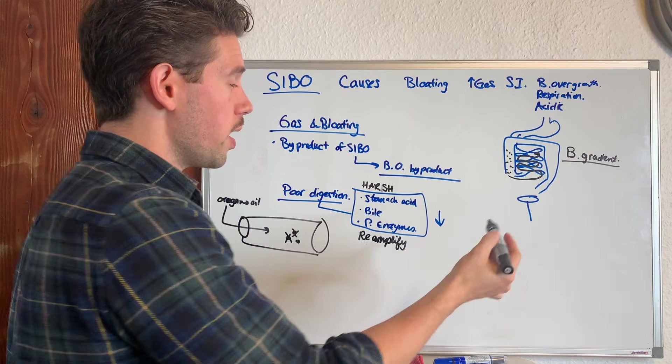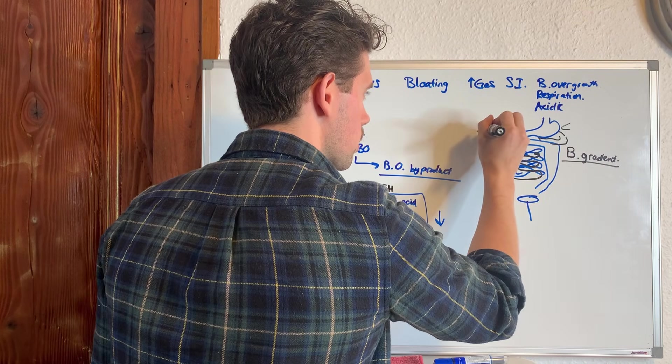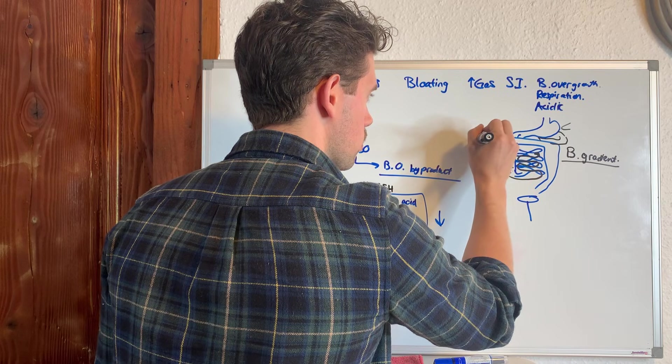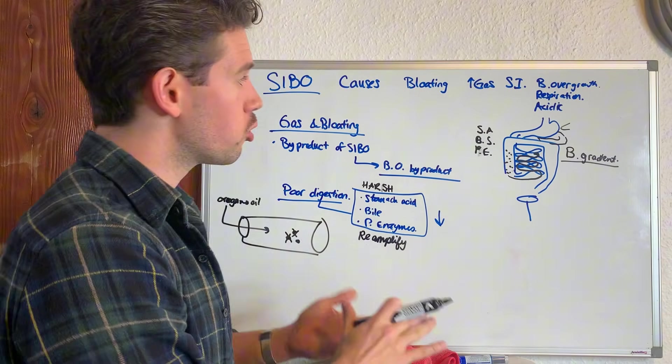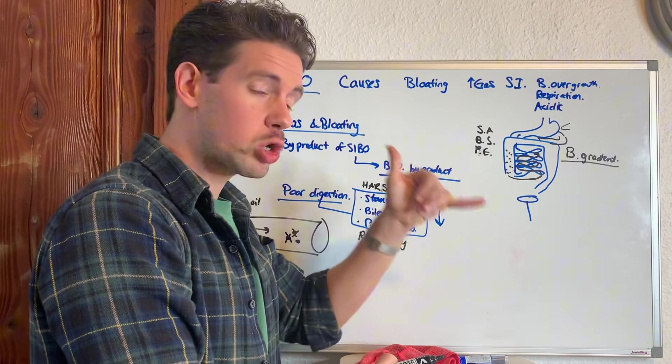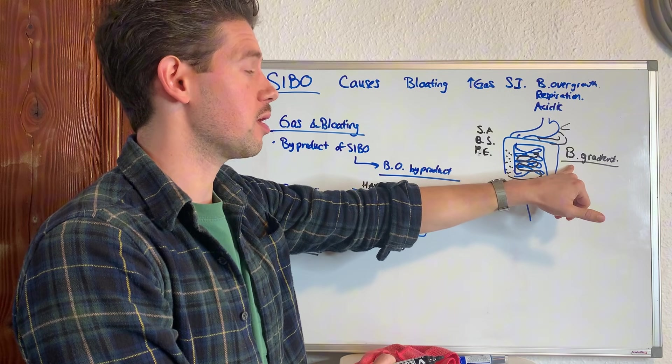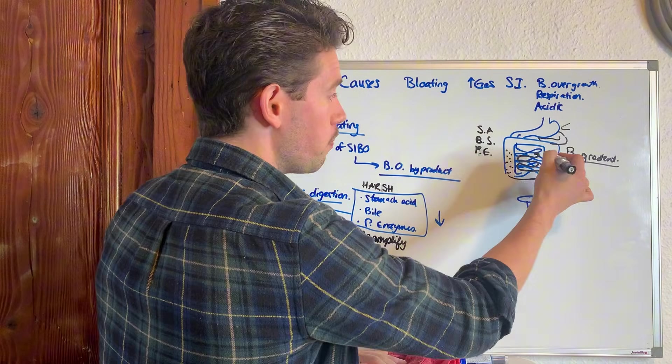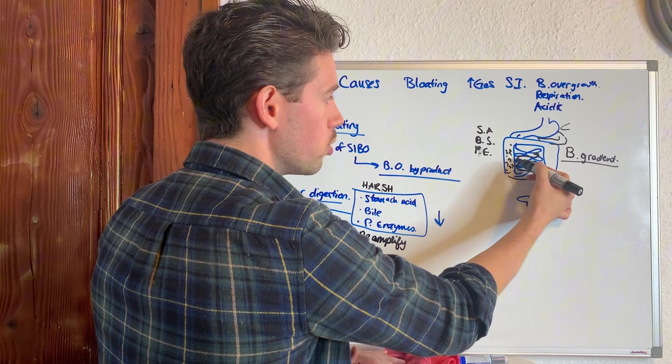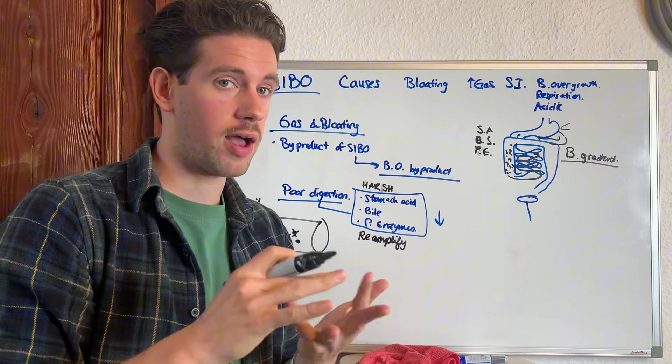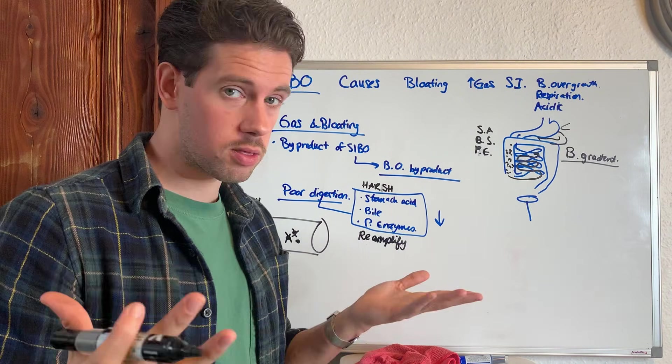But when you go and you address your stomach acid levels, your pancreatic enzymes, your bile salts, stomach acid, bile salts, pancreatic enzymes. When you bump these back up and you have a diet that is conducive to having enough of these sections, you create an environment where the bacterial gradients slowly but surely reestablishes itself and will fall back into line. And you'll have your microbiome, which is lovely. And these guys will slowly retreat back and you'll have less bloating and you'll have less small intestinal bacterial overgrowth, and you'll have less symptoms on a day-to-day basis and you'll have better digestion, which is the main goal anyway.